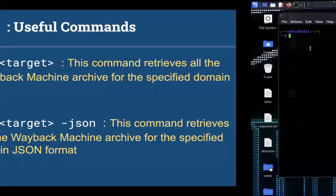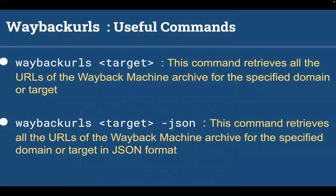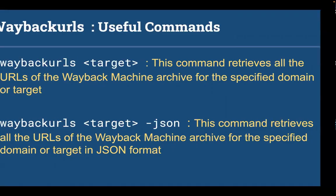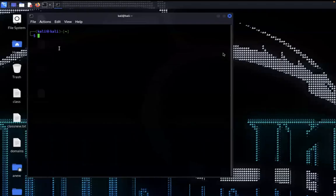If you want to crawl the links in JSON format, you have to run Wayback URLs, then specify the domain name and the flag hyphen JSON. This command retrieves all the URLs of the Wayback Machine archives from the specified domain or target in JSON format. So you specify the target name and hyphen JSON.